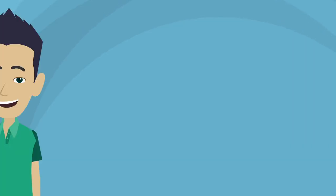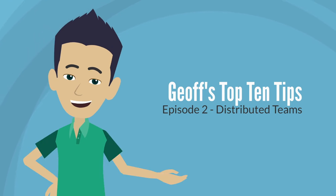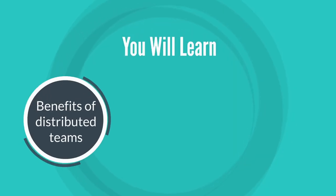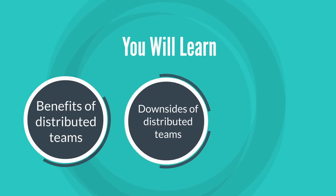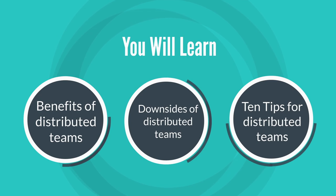In this video we're going to talk about the benefits of distributed teams, the downsides of distributed agile teams, and 10 things you can do to improve things. A distributed team is a team where not everybody's in the same physical location. In the early days of agile, distributed teams got a bad rap simply because many organizations took the opportunity to offshore their work to the cheapest possible area, and that's where a lot of the stigma came from.